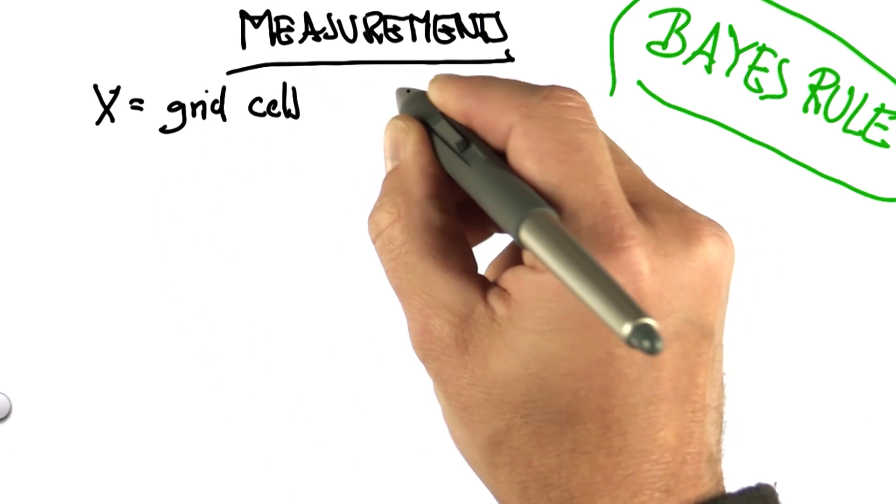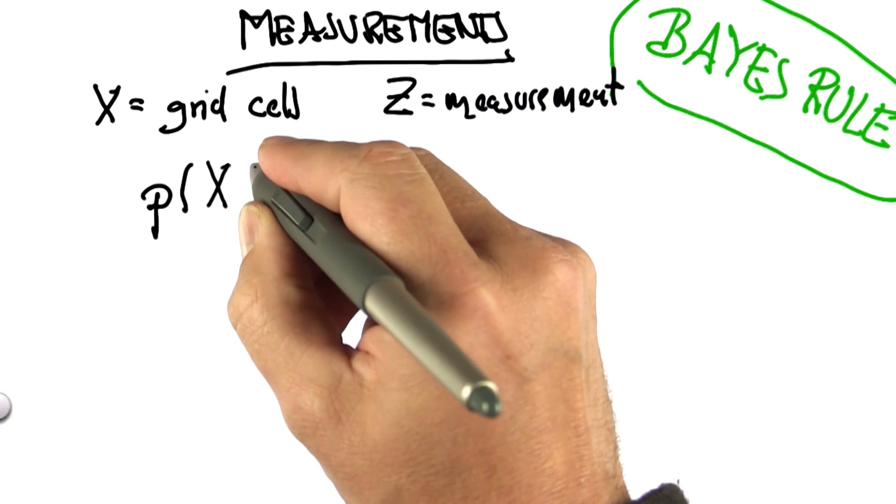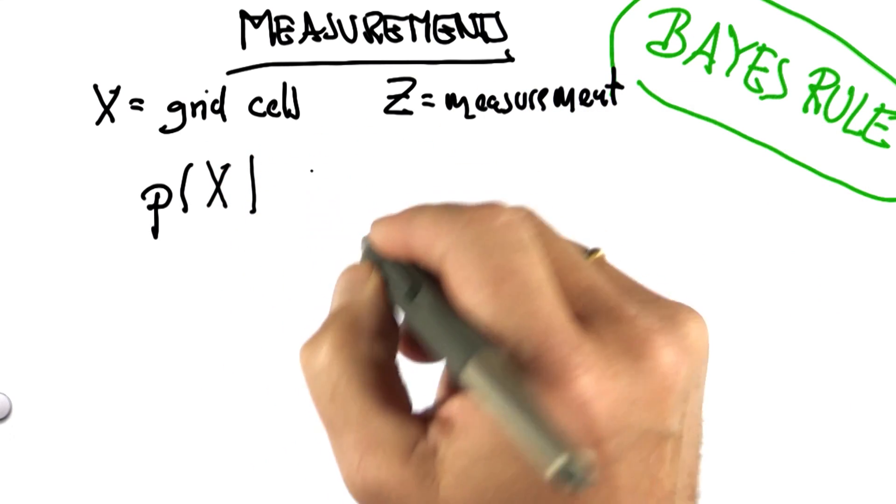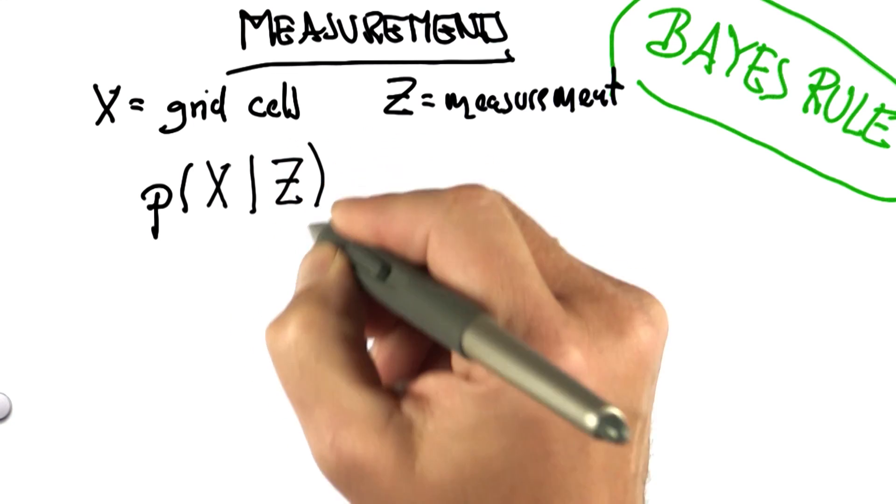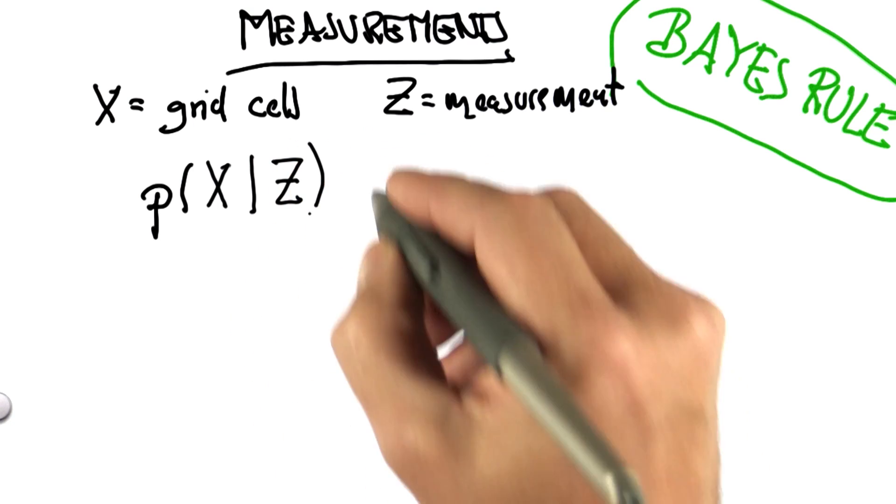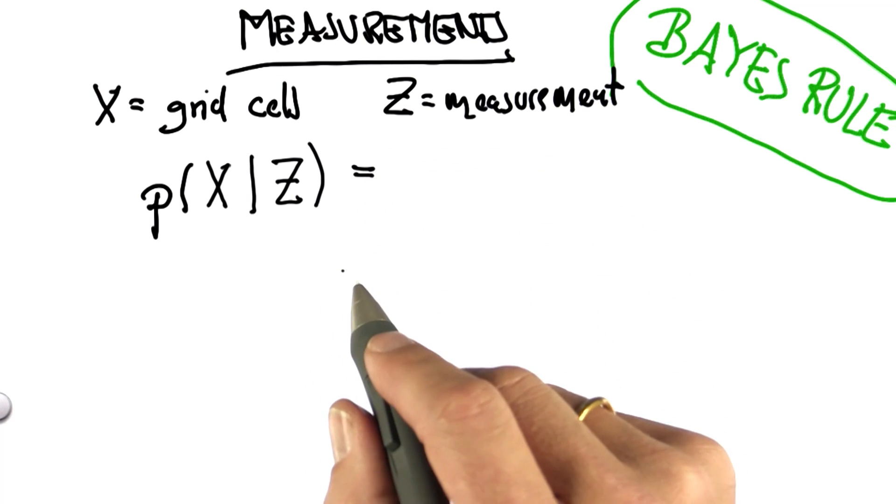Suppose x is my grid cell and z is my measurement. Then the measurement update seeks to calculate a belief over my location after seeing the measurement. How is this computed? Well, it was really easy to compute in our localization example, and now I'm going to make it a little bit more formal.